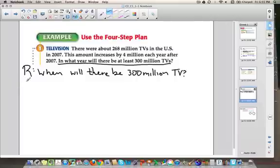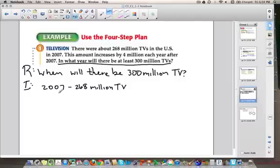That's the problem that we need to figure out. So now we're going to do the I step, the important information. What important things does this word problem tell us? Well, it tells us right here that there were about 268 million TVs in the United States in 2007. So we could write down that 2007, there's 268 million TVs. And it also tells us that this amount increases by 4 million each year. So that means every single year there's an additional 4 million televisions added. So we could write down that there's 4 million more each year. That's the I step.